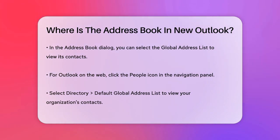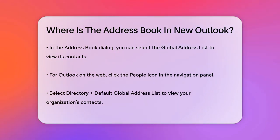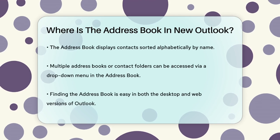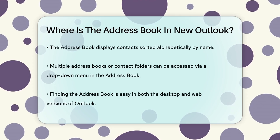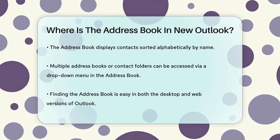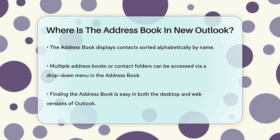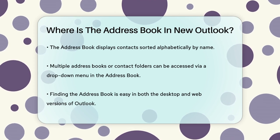In Outlook on the web, the process is similar. Launch Outlook on the web, click the People icon in the navigation panel, and then select Directory > Default Global Address List. This will display your organization's global address list. When you open the address book, you'll see a list of all your contacts sorted alphabetically by name. If you have multiple address books or contact folders, you can use the drop-down menu under Address Book to choose among them.